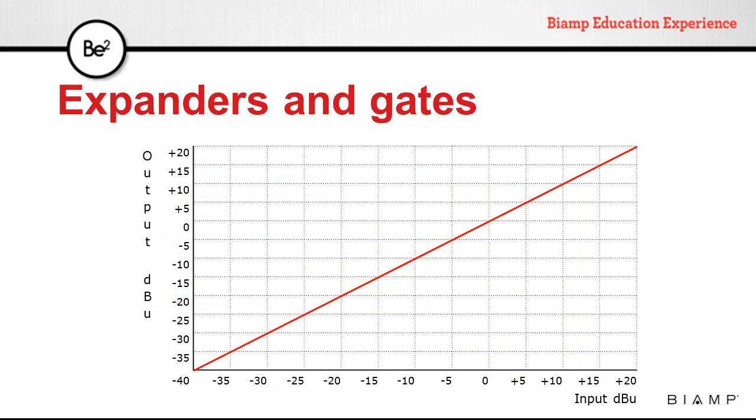We can better explain how an expander works with a dynamic response graph. This graph represents the output level versus the input level. The input level is represented on the horizontal axis while the output level is represented on the vertical axis.